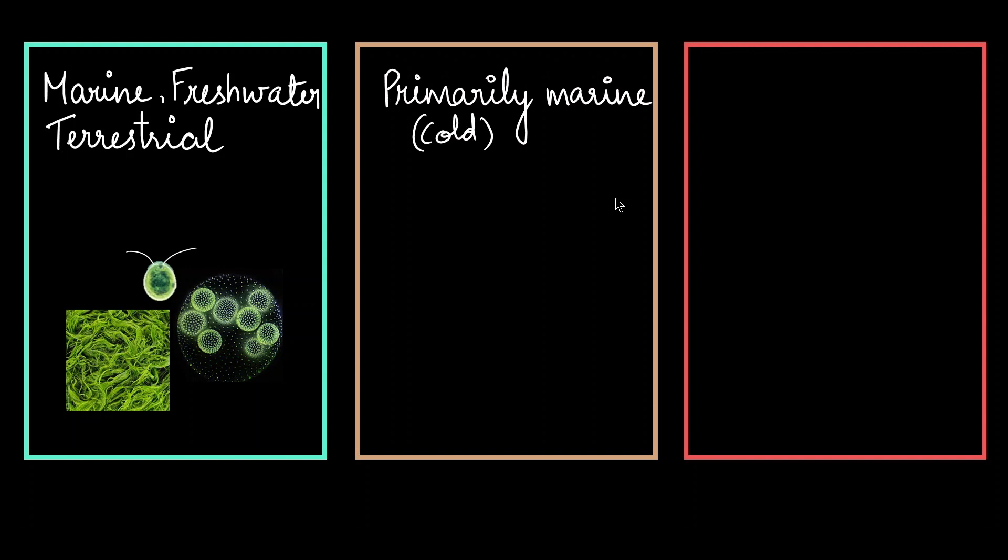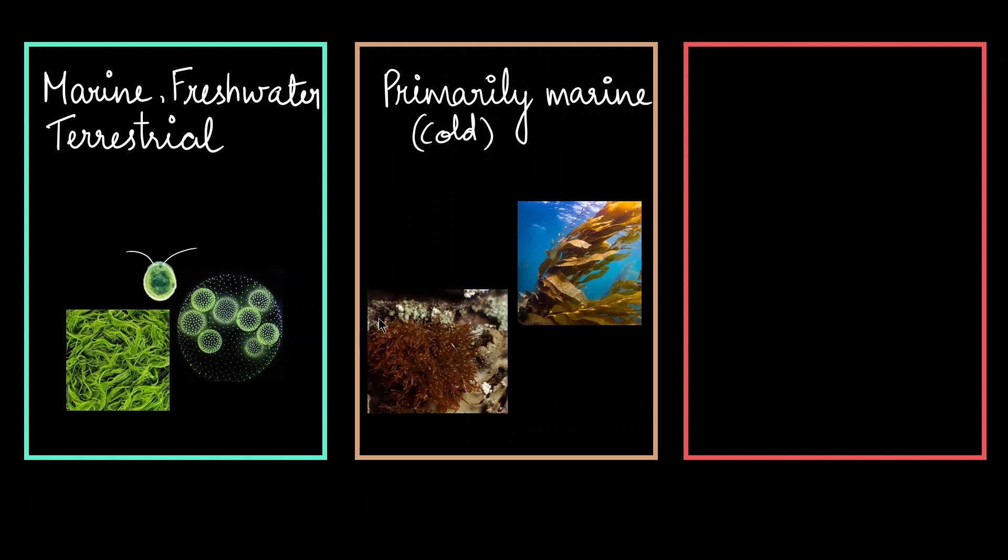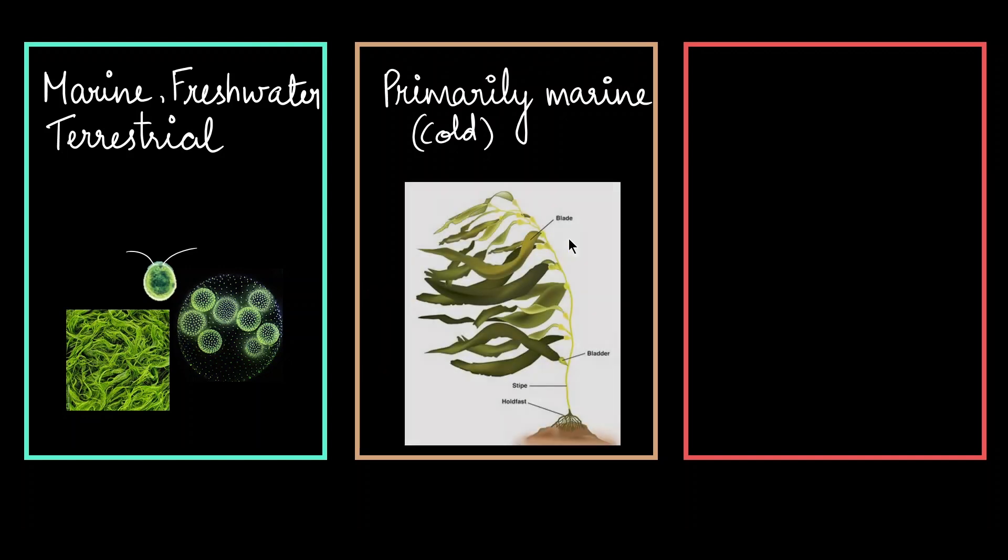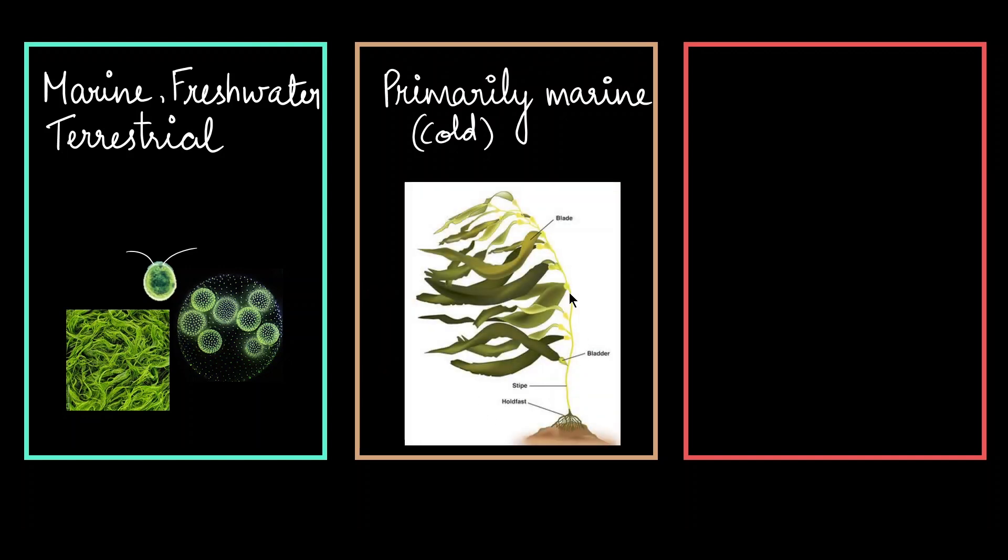Brown algae like to live in the sea but in cold waters. They can occur as these simple filamentous species or they could be profusely branched and really huge like kelp. They look almost like plants. So this is how a brown algae is.